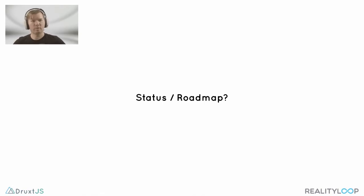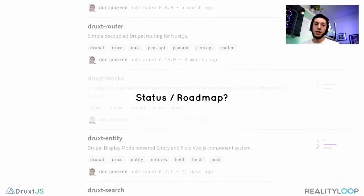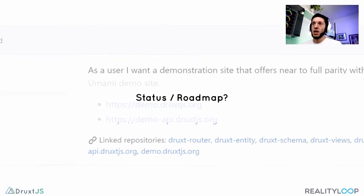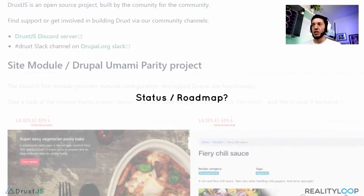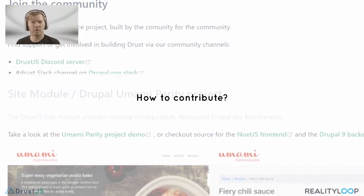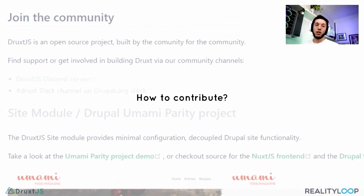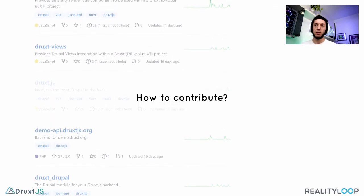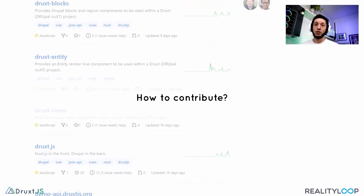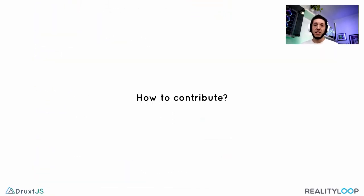It looks like Druxt is pretty mature already. What's the status and current roadmap? There's still a lot to be done. Our target for a 1.0 release is feature parity with the Drupal Umami demo. But to get there, we need to engage with the communities — back-end and front-end alike — which is part of the reason for this presentation. And what sort of contributions are you looking for? All contributions are welcome of course. The more eyes on the project, the better it becomes for everyone. Documentation, testing, feature requests, and support queries help a lot, as do pull requests. The project is open source, and while Realityloop is currently funding my development time, there will be a point where the project will also be looking at options for funding.